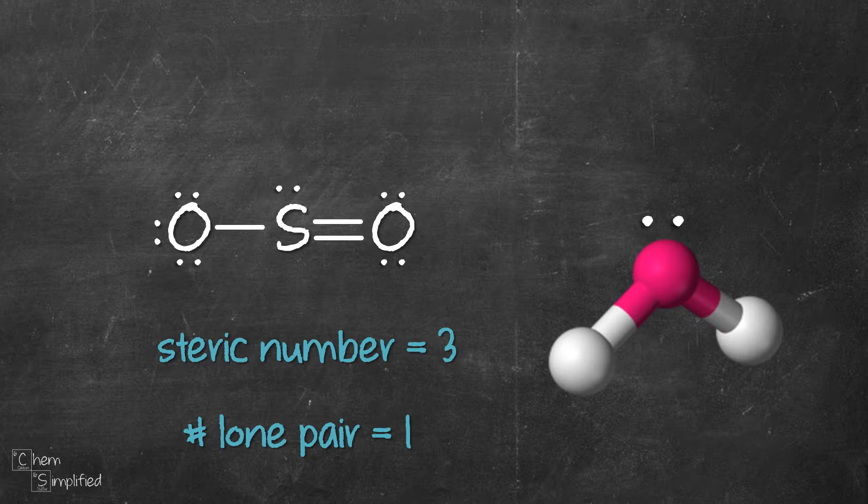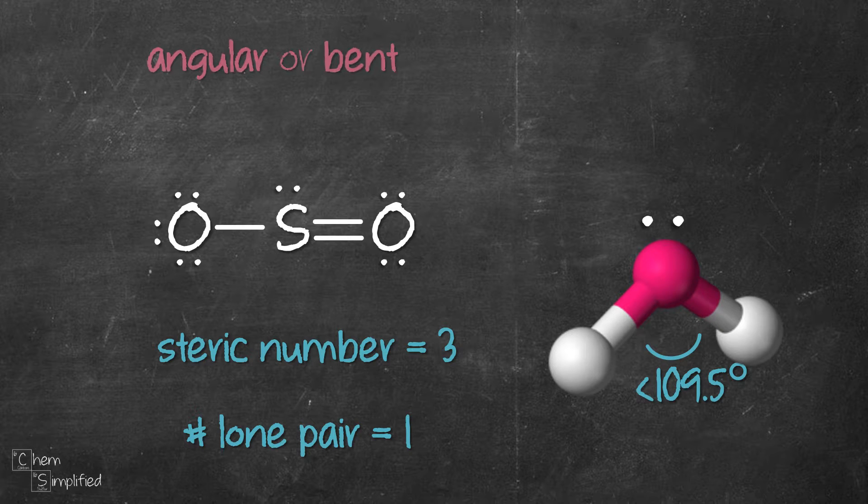The bond angle for this type of arrangement is usually between 104 to 109 degrees. It actually depends on the terminal atoms that surround the central atom. So we call this shape angular or bent.